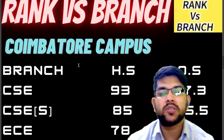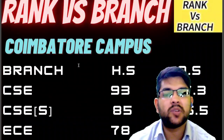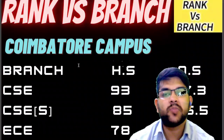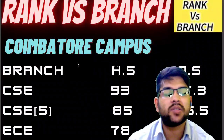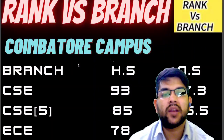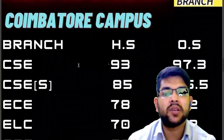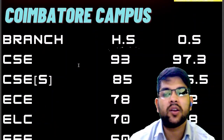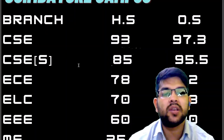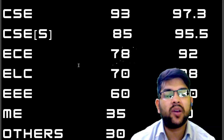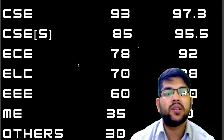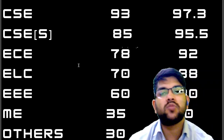Here is the Coimbatore campus, which is the main campus. For CSE, 93+ percentile will be required for home state, and for other state it is 97.3. For CSE specialization, home state needs 85+ percentile and other state is 95.5. For ECE it is 78 and 92 for home state and other state. For Electrical and Computer Engineering it is 70 and 88. For EEE it is 60 and 80. For Mechanical it is 35 and 70. For other branches you can get at 30 percentile if you are from home state, and for other state it is 60+ percentile.